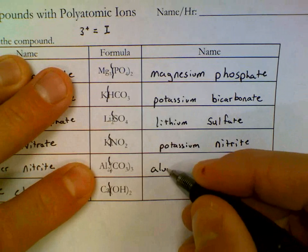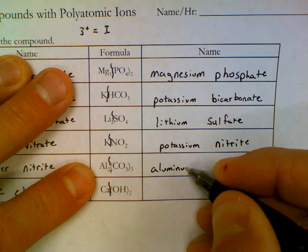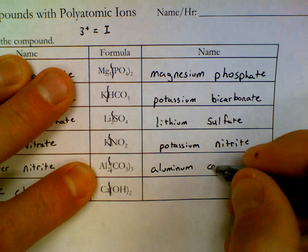Al is aluminum. And CO₃ is called carbonate.